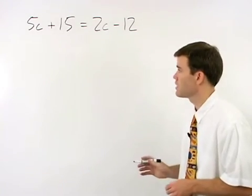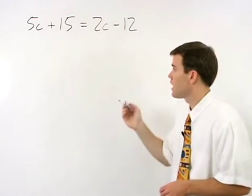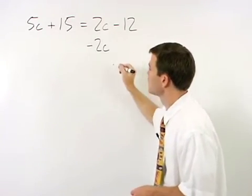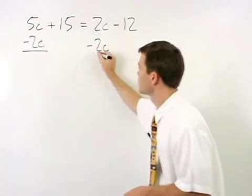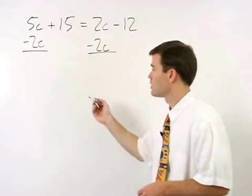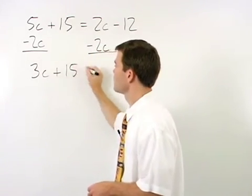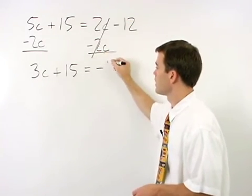So let's put our c's together on the left side of the equation, and we do that by subtracting 2c from both sides. On the left, we have 3c plus 15, and on the right, we have negative 12.